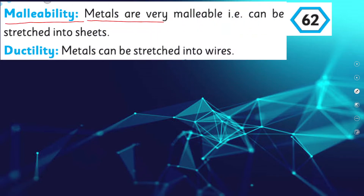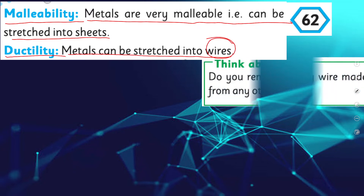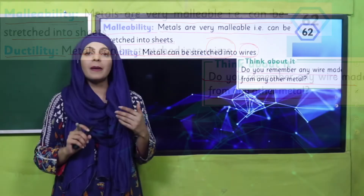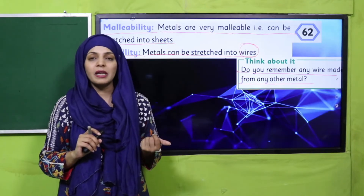Malleability: metals are very malleable and can be hammered into thin sheets — in ko hammer karke sheets mein change kiya ja sakta hai. Ductility: metals can be stretched into wires — patli wire form mein bhi change kiya ja sakta hai. Do you remember any wire made from a metal other than copper? I showed you copper wire before — have you seen a wire made from a different metal?